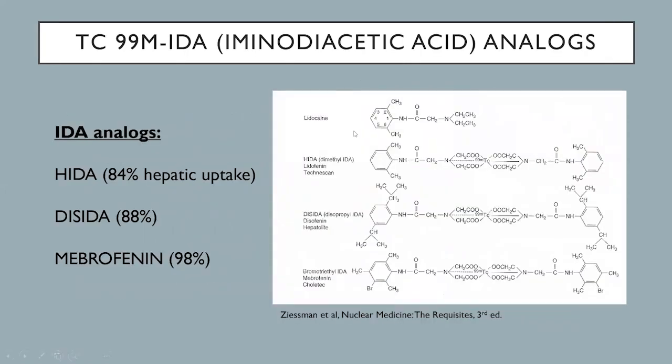Some immunodiacetic acid analogs include HIDA, DISIDA, mebrofenin, or Choletec.